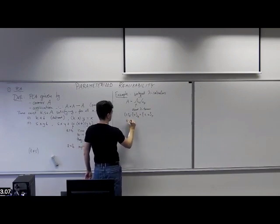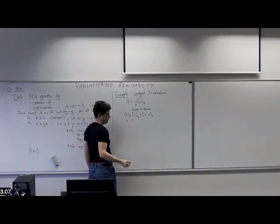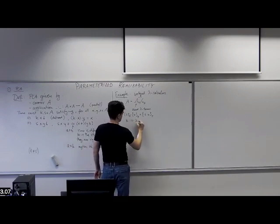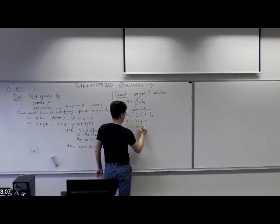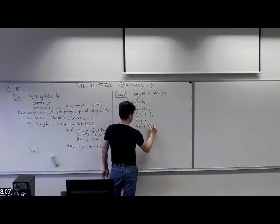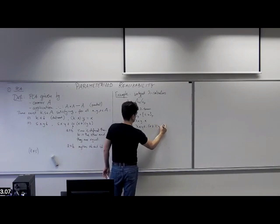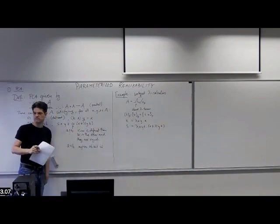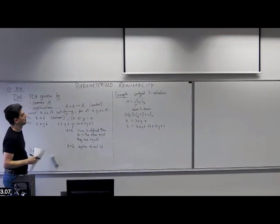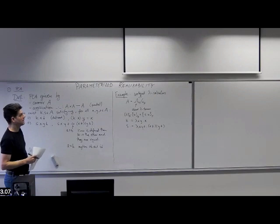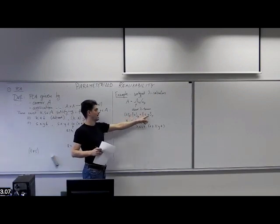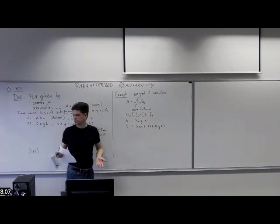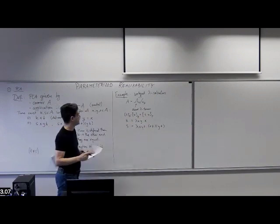What is K? K is lambda x, y. x. And S is lambda x, y, z. x z (y z). So exactly what we want it to be. That's an example of a combinatory algebra. This one is in fact total because the application is always defined — in lambda calculus you can apply anything to anything and you just get another term.